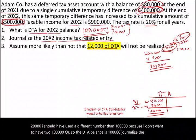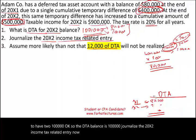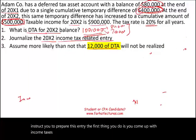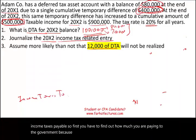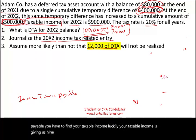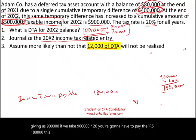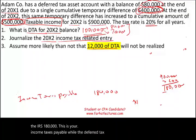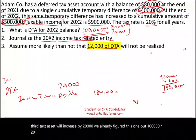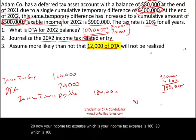Now, journalize the 20x2 income tax-related entry. The first thing you do is come up with income taxes payable — how much you are paying to the government. Your taxable income is given as $900,000. Taking $900,000 times 20%, you have to pay the IRS $180,000 — this is your income taxes payable. The deferred tax asset will increase by $20,000 (the $100,000 times 20% we already figured out). Your income tax expense is therefore $180,000 minus $20,000, which equals $160,000.